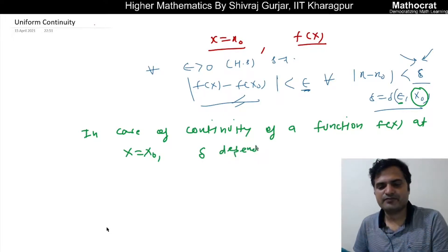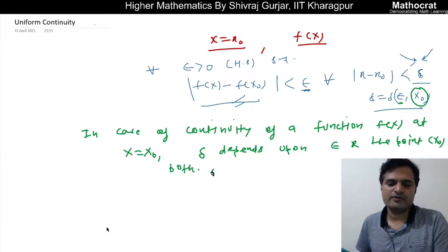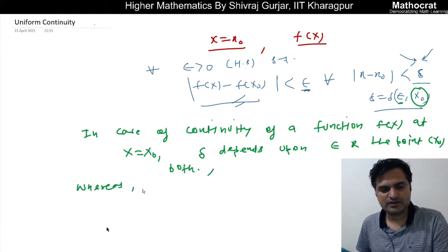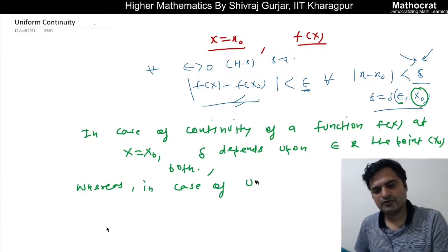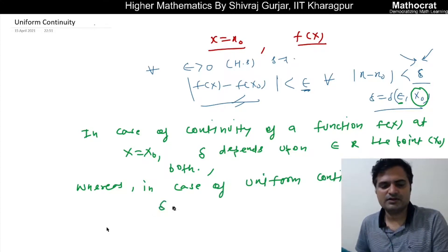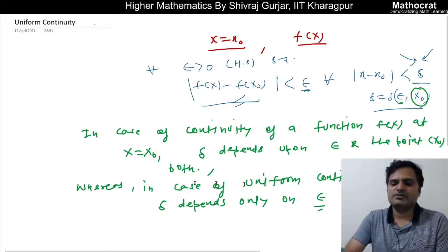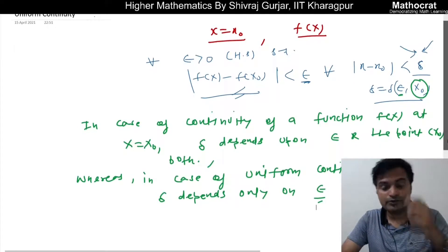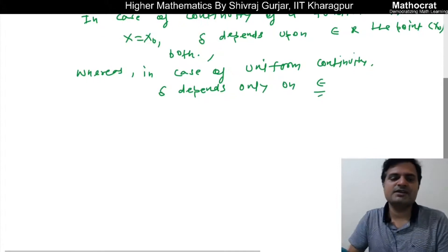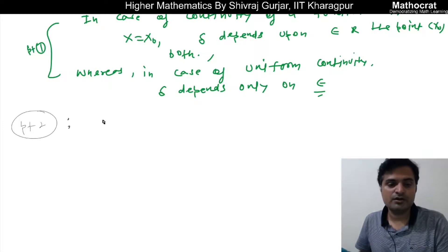So in continuity, delta depends upon epsilon and the point x-naught — we discuss continuity at a point. Whereas in the case of uniform continuity, delta depends only on epsilon. That is the key distinction.